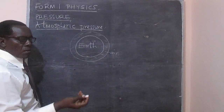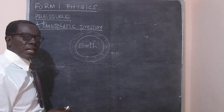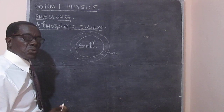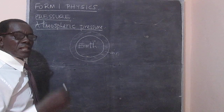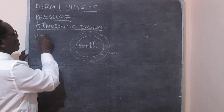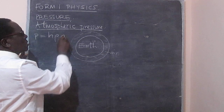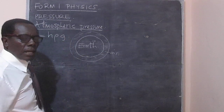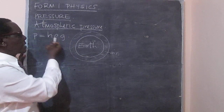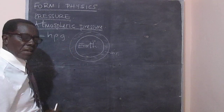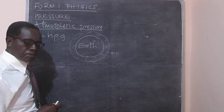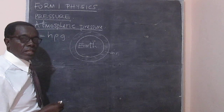We obtained a formula for working out the pressure due to a liquid column. The same formula — where we say pressure equals height times density times the pull of gravity — can be used to calculate the atmospheric pressure.